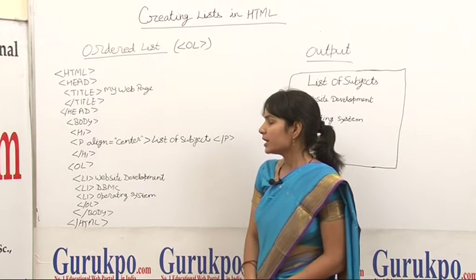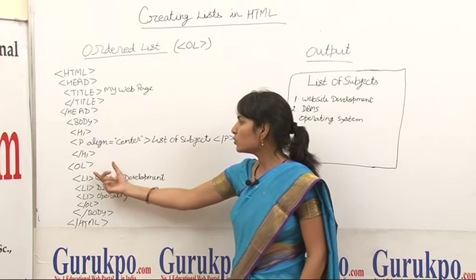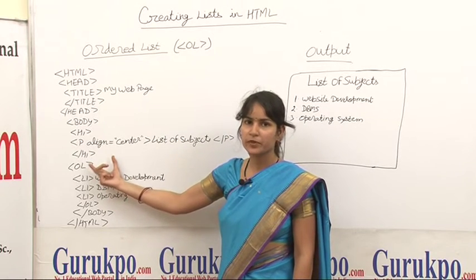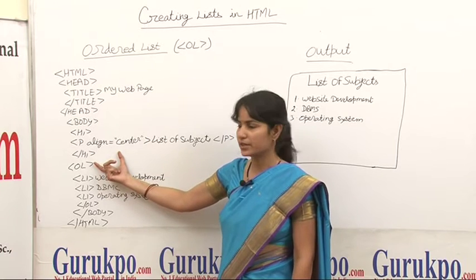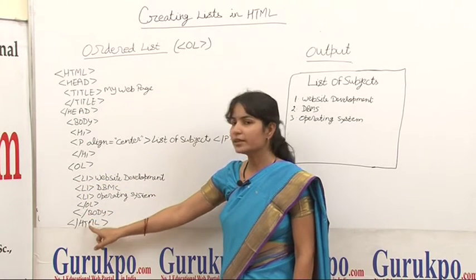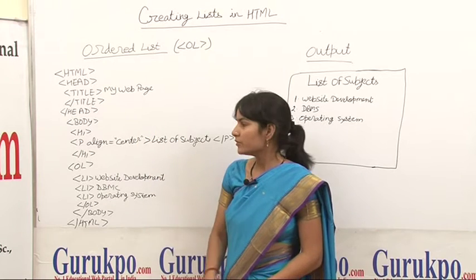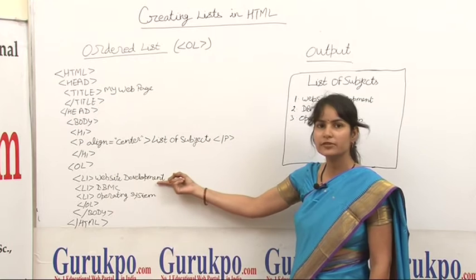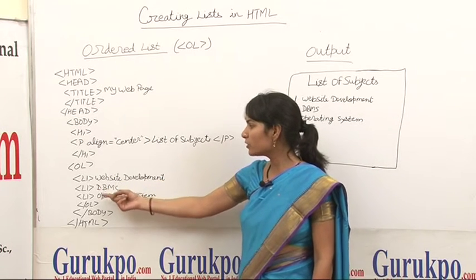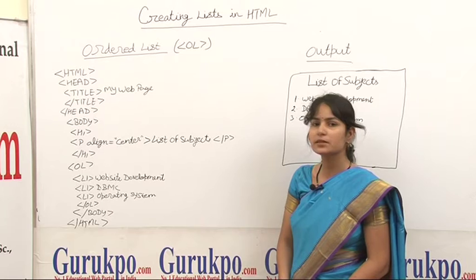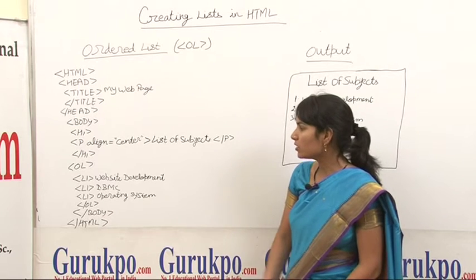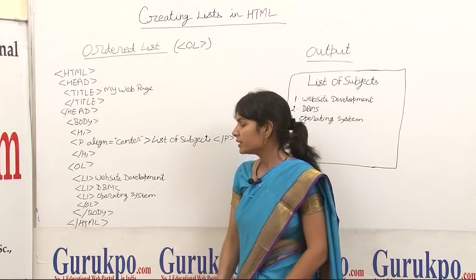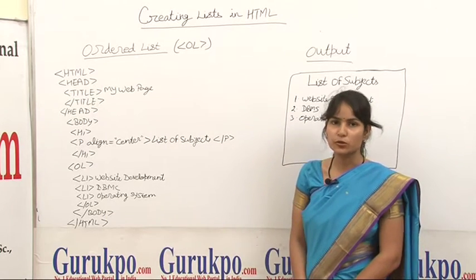Now the actual part of this topic is the OL tag. This is used to display an ordered list, that is, a numbered list. The LI tag is used to define the content of the list. The first LI tag will display 'website deployment' as the first item, the second 'DBMS' as the second item, and the third 'operating system' as the third item. Now we close the OL tag to close the list, and the body tag and HTML tag are also closed.